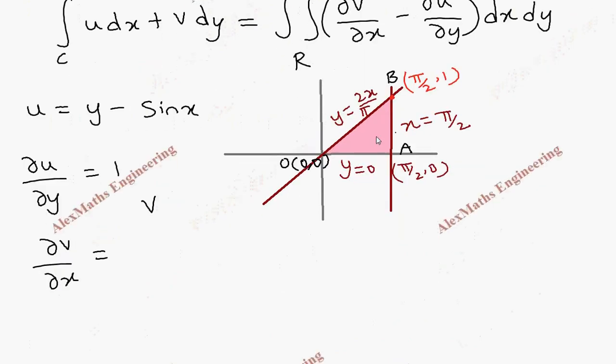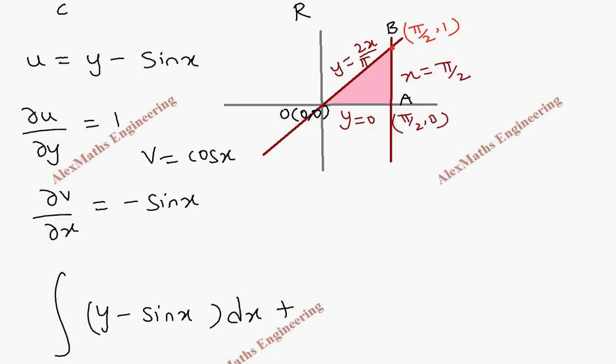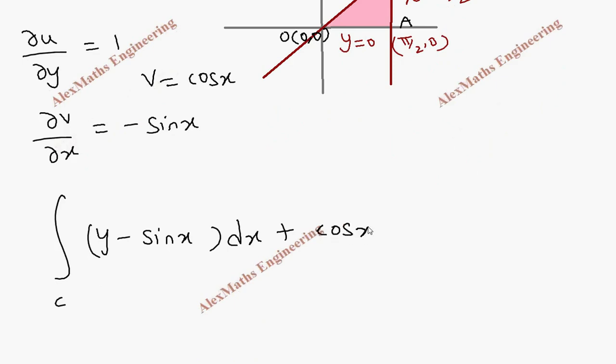And now we have to evaluate integral over c, y minus sin x into dx plus cos x into dy. But instead we can evaluate double integral over the region r. And it is dou v by dou x which is minus sin x minus dou u by dou y which is 1. Then we have dx dy.